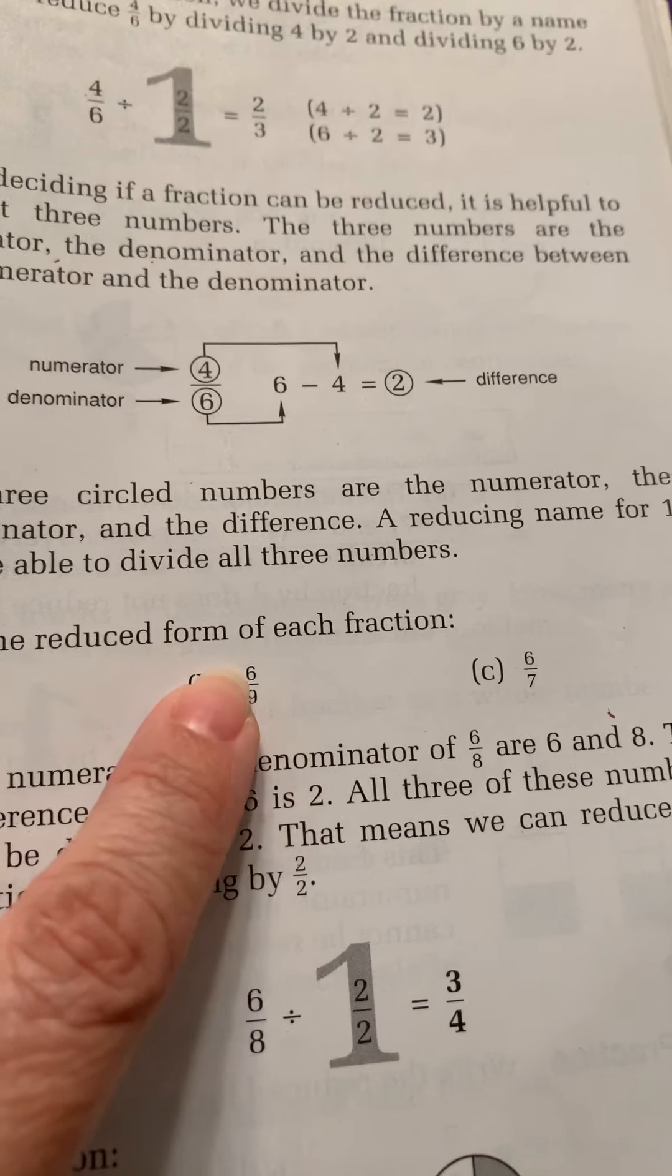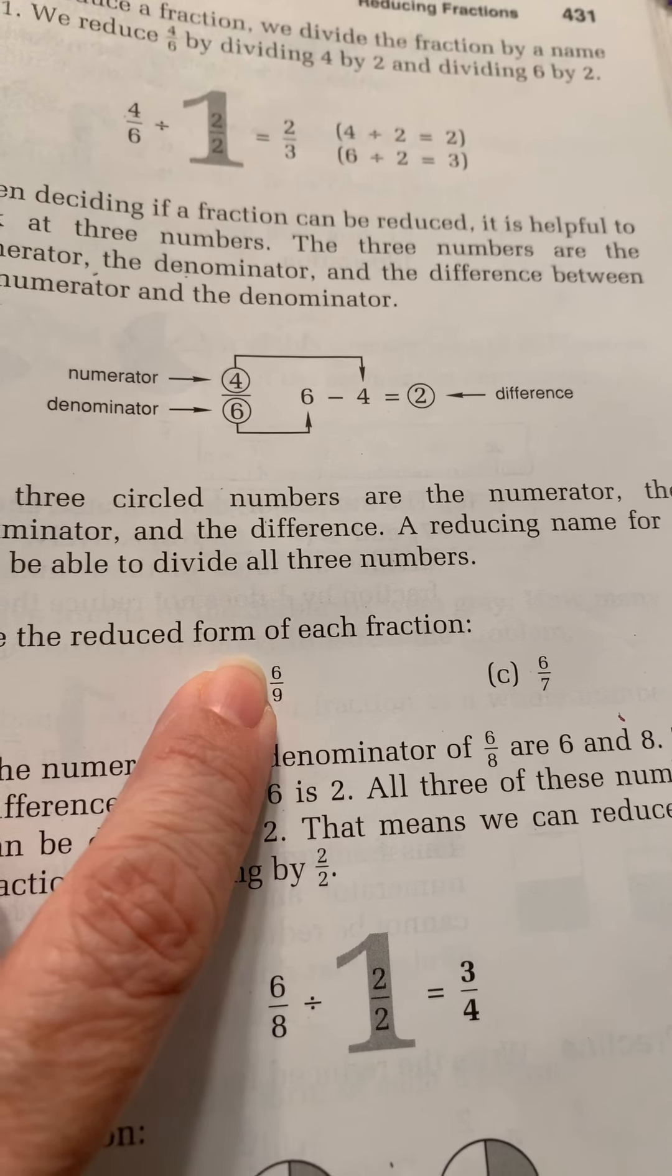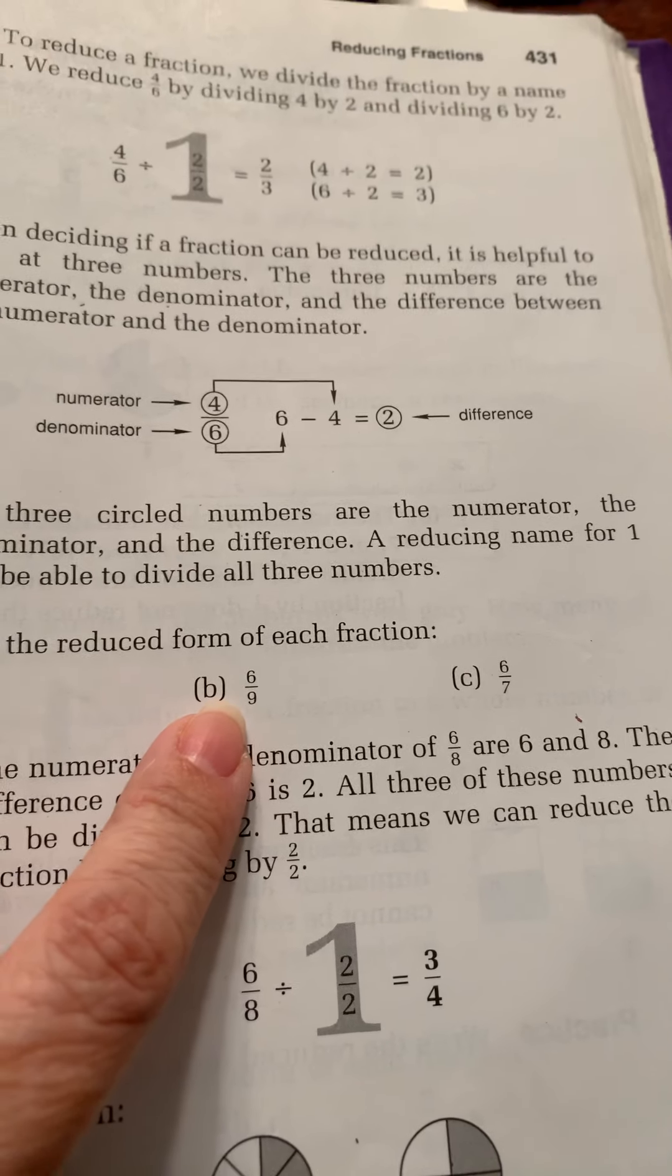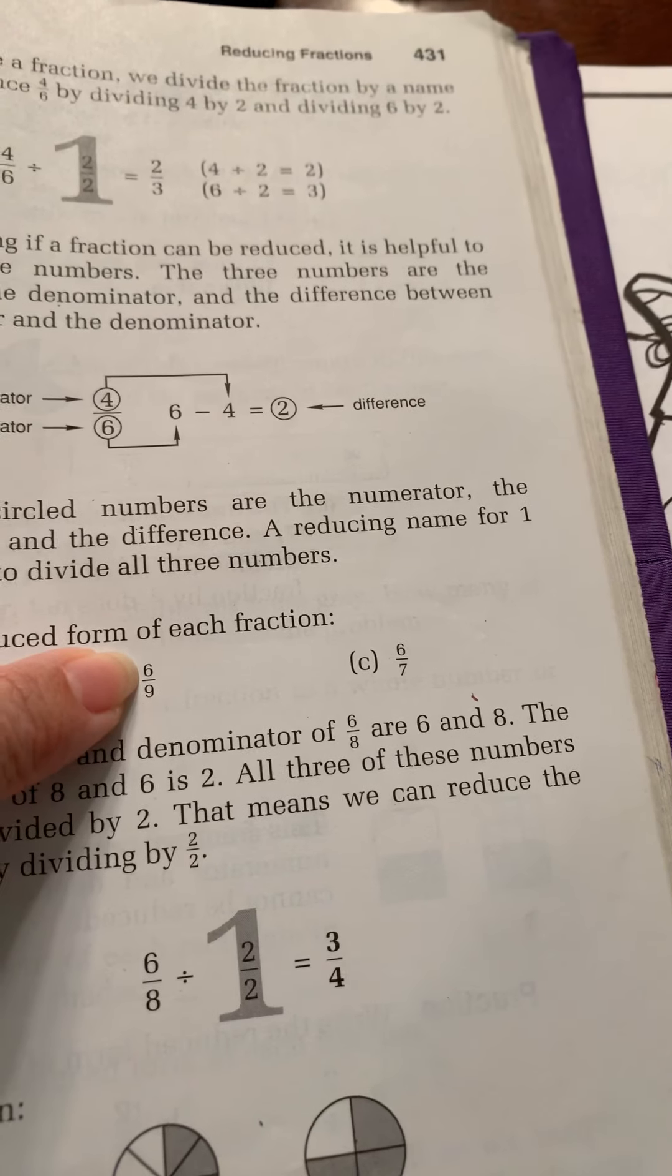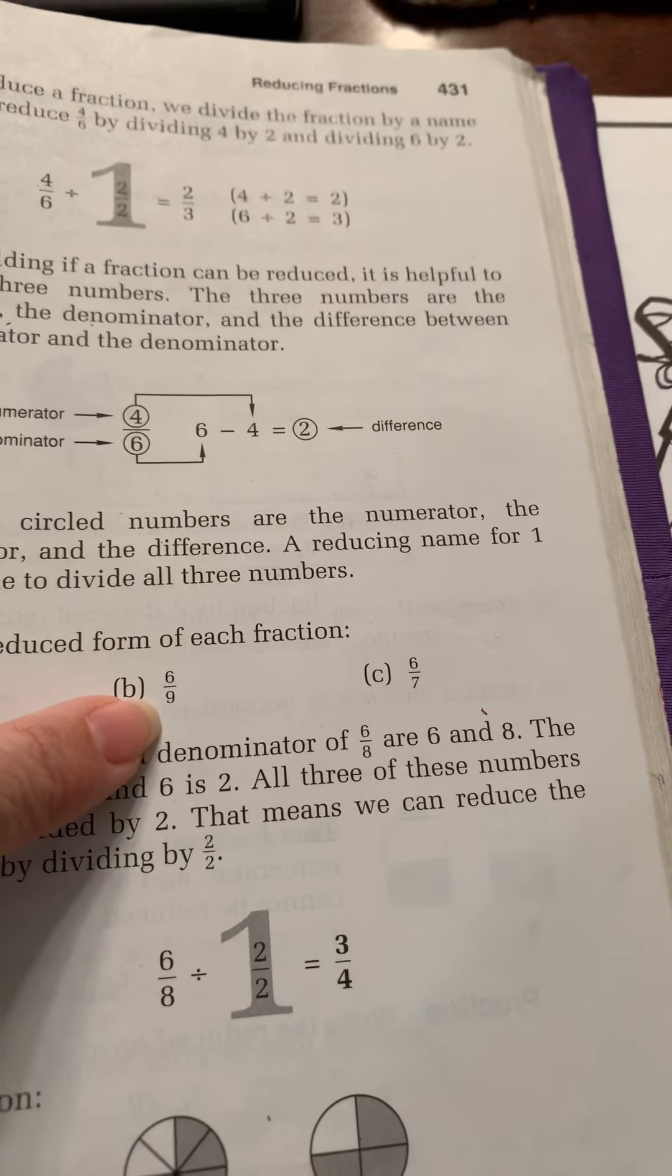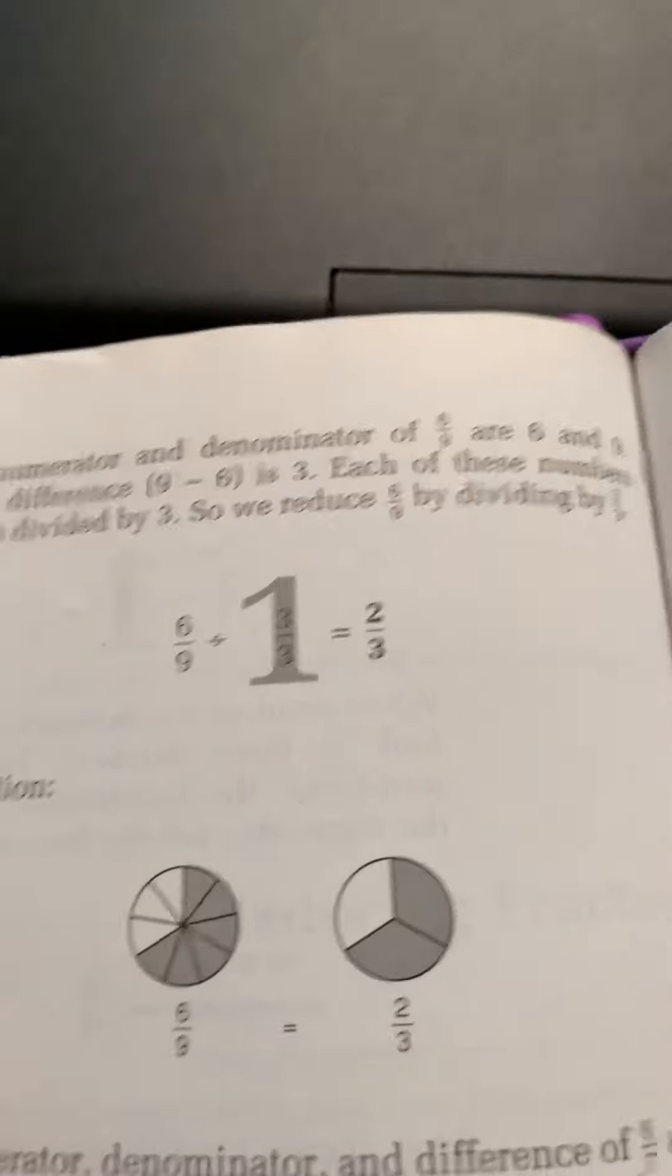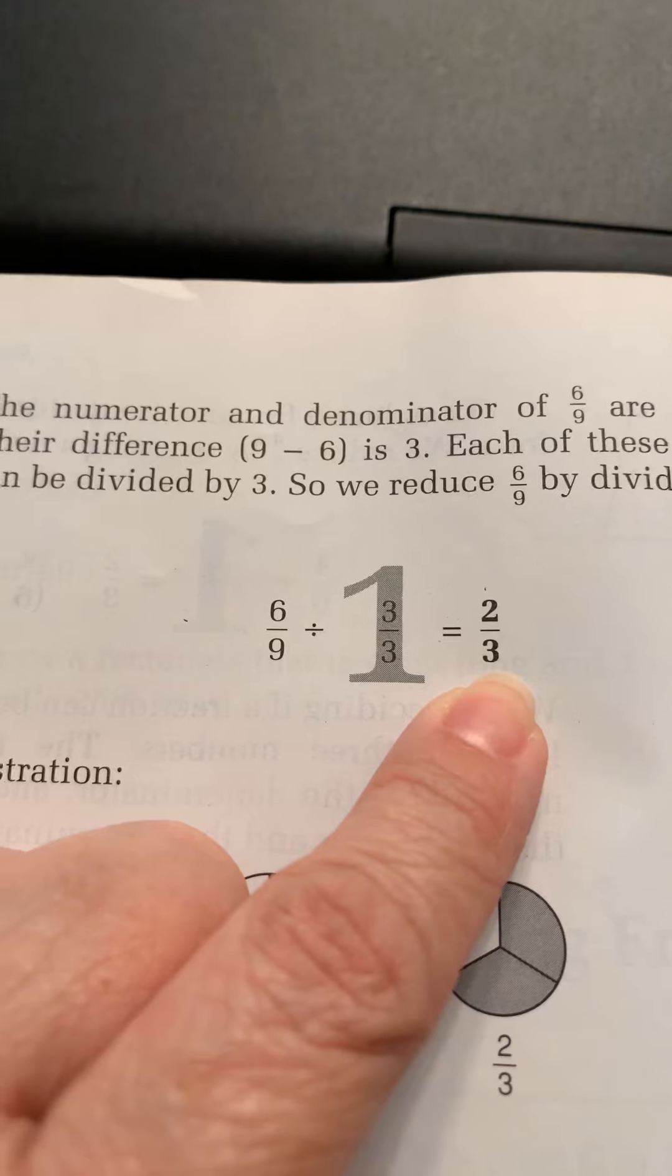Okay, B is six-ninths. Okay, the difference between six and nine is three. So we're going to try dividing by three-thirds. Okay, six can be divided by three, right? Yes, that would be three. Nine, I mean two, I'm sorry. Six divided by three is two. Nine divided by three is three. So let's look at it over here. Six-ninths divided by three-thirds equals two-thirds.